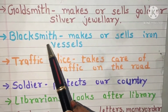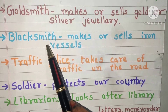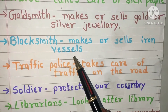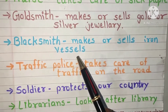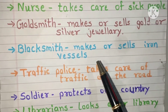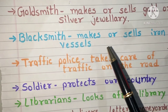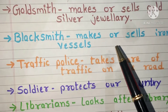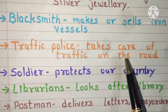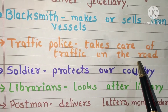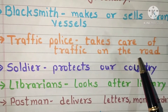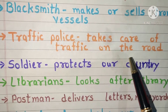Blacksmith, also known as luhar, makes or sells iron vessels — different utensils like cooker, thali, bowl, spoon, etc. Traffic police takes care of traffic on the road. Near the signal you can find traffic police.